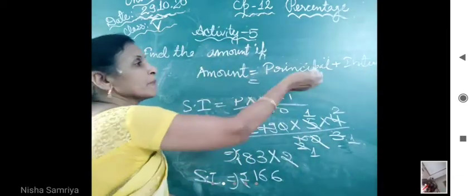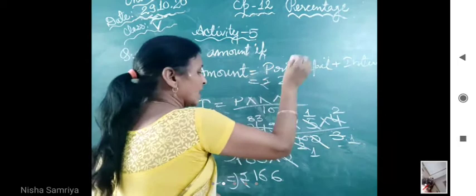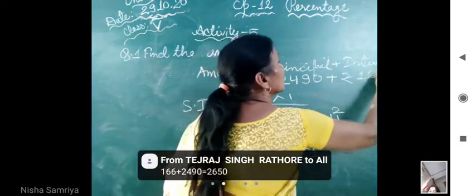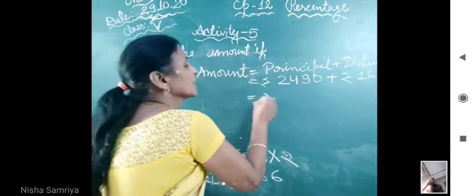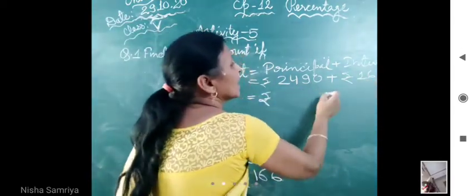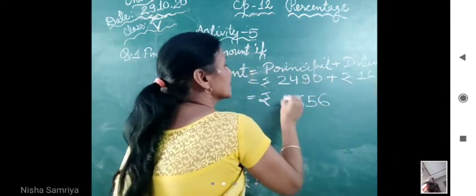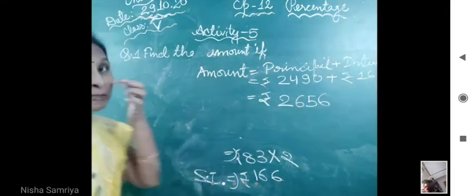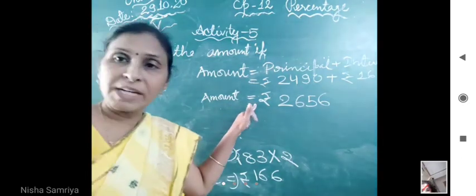Now we have P plus I. So principal, what do we do? 2490. And interest, what do we do? 166. Now you add these. Now what do we do? Add them. 6, 9 plus 6 is 15, 4 plus 1 is 5, plus 1 is 6. And our answer comes to 2656. This is the amount. We will calculate the amount. Clear all of you?